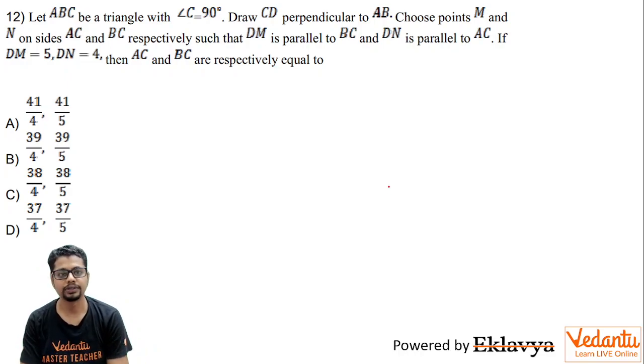Hi everyone. The question is: let ABC be a triangle with angle C equal to 90 degrees. Draw CD perpendicular to AB. Choose points M and N on sides AC and BC respectively such that DM is parallel to BC and DN is parallel to AC. If DM equals 5, DN equals 4, then AC and BC are respectively equal to...